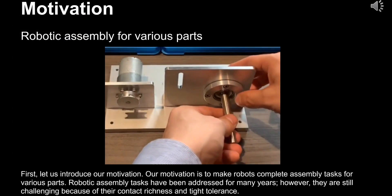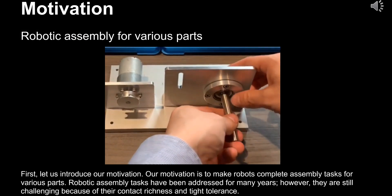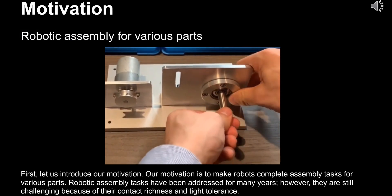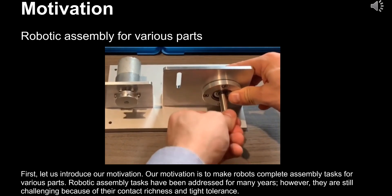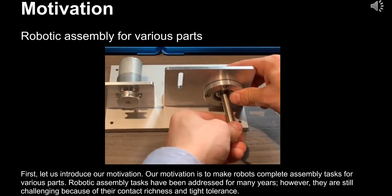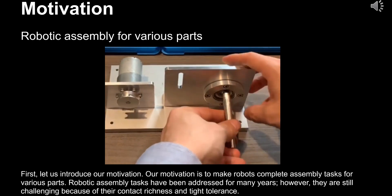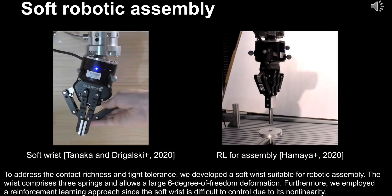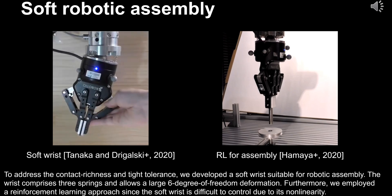First, let us introduce our motivation. Our motivation is to make robots complete assembly tasks for various parts. Robotic assembly tasks have been addressed for many years. However, they are still challenging because of their contact richness and tight tolerance. To address the contact richness and tight tolerance, we developed a soft wrist suitable for robotic assembly.